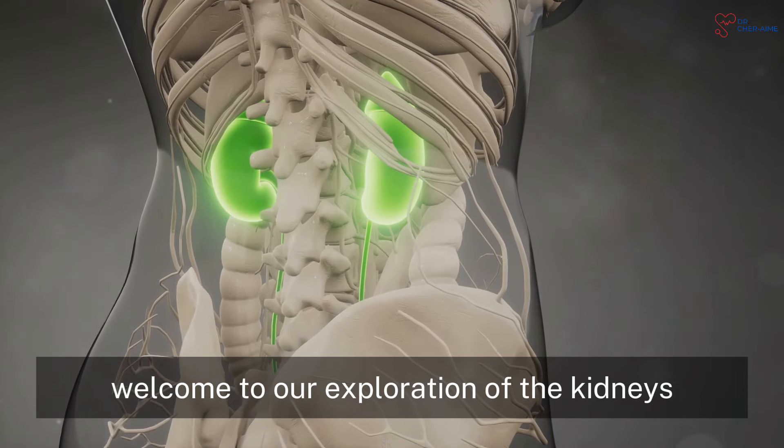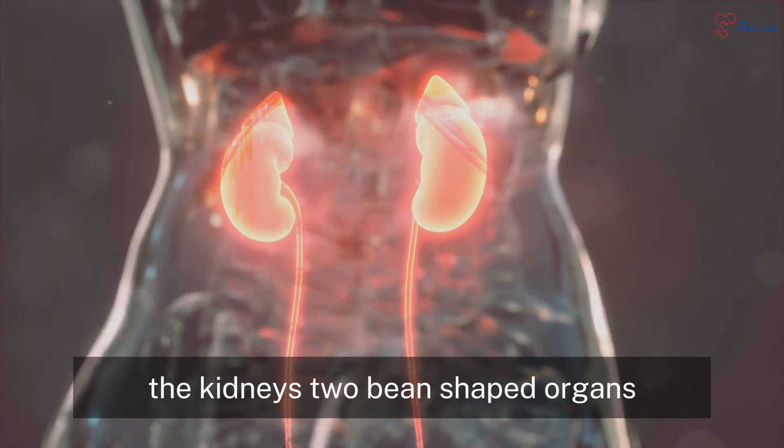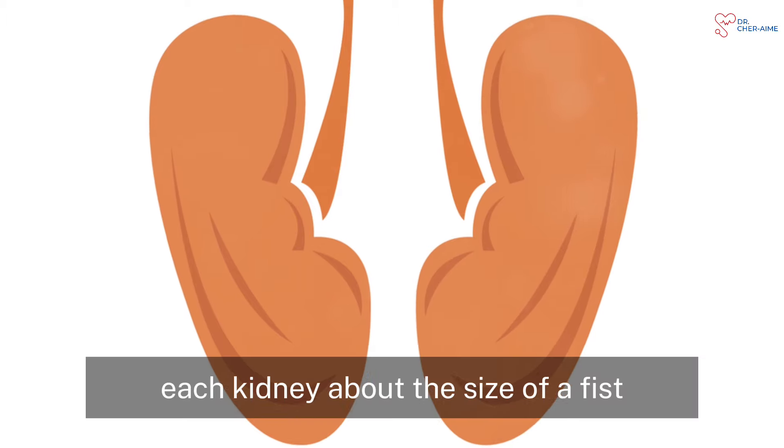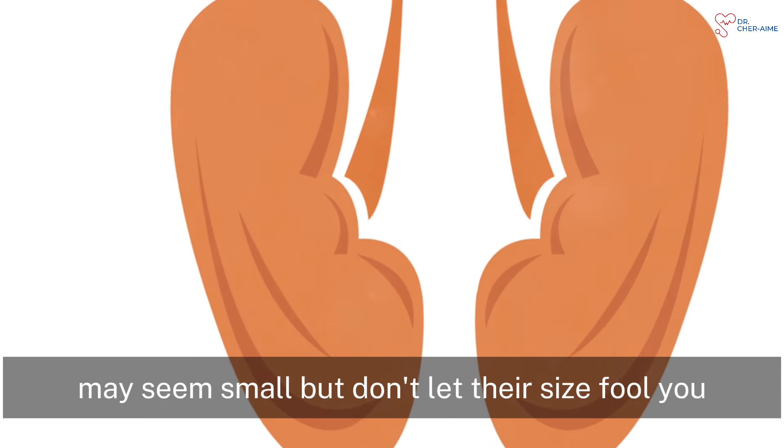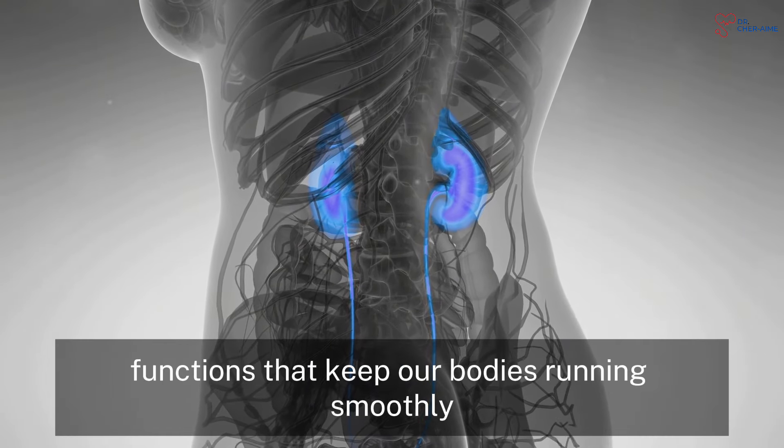Welcome to our exploration of the kidneys and their vital roles in the human body. The kidneys, two bean-shaped organs, are located just below the ribcage on either side of the spine. Each kidney, about the size of a fist, may seem small, but don't let their size fool you.